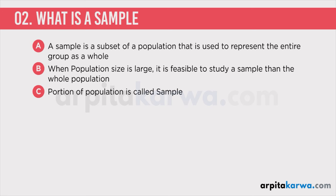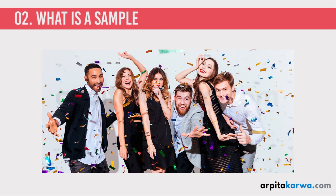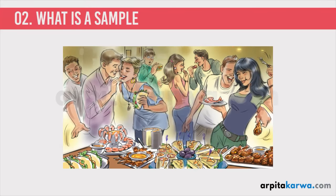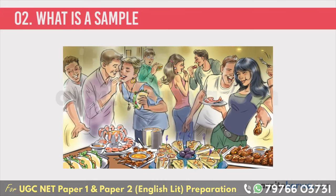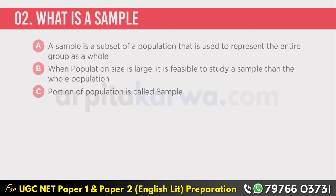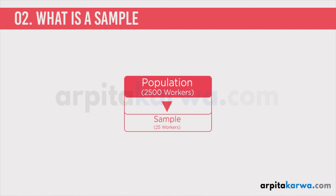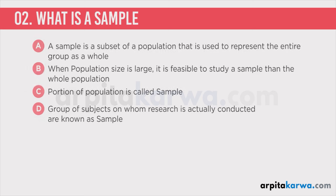For example, someone may be trying to plan an office party, and there are 2500 people in the office. They want to know what food choices to keep for the party. It would be quite a task to ask all 2500 people their food preferences. So the party planner decides to choose a sample — say 25 people — and asks their food preferences. On the basis of that, he plans the party, thinking that these 25 people represent the whole population of 2500. So the sample of any study is the group of subjects involved in the study.